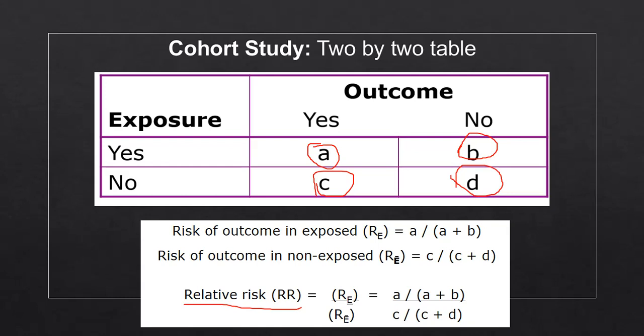So in order to come up with the relative risk of this particular cohort study or this 2x2 table, there are a series of steps that we have to do. First, we're going to want to obtain the risk of outcome in the exposed group. And then we're going to come up with the risk of outcome in the non-exposed group.